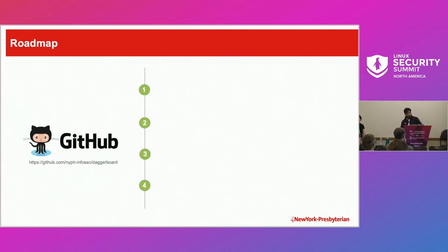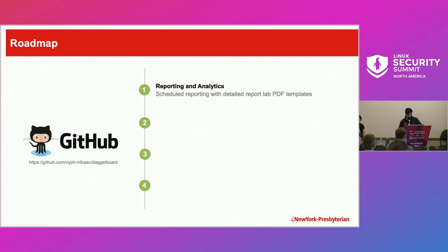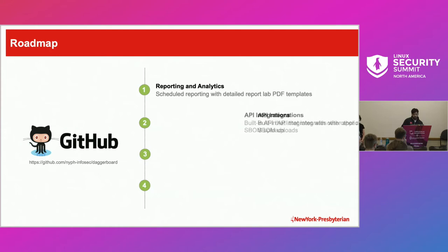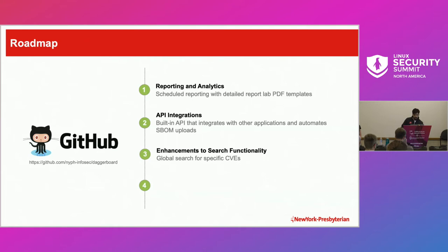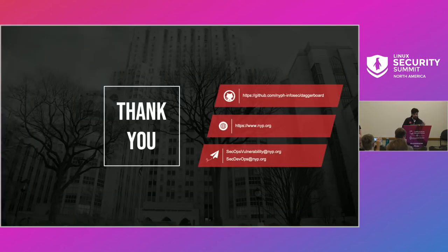Let's talk about the roadmap ahead. The application is built and released on GitHub. We want to enhance reporting analytics for an executive summary to be scheduled on an ongoing basis — we're in an automation business, so let's automate that. We want to release an API that can integrate with any product. We also want to enhance the search functionality to allow searching by CVEs. And please, everyone is welcome to contribute on GitHub.